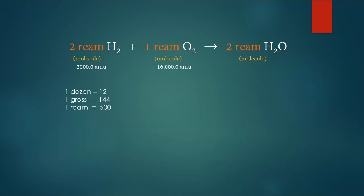A dozen isn't enough — we need to scale further. Maybe a gross (a dozen dozen, or 144): two gross of hydrogen molecules would be 576 AMUs, still nothing. How about a ream? A ream is 500 objects — but even 500 reams gives only 2,000 AMUs, nowhere near a trillion trillion. The problem is no existing grouping was large enough. A dozen works for eggs, a gross for pencils, a ream for paper — all invented for convenience. When we need a group and there isn't one, we make a new one up.